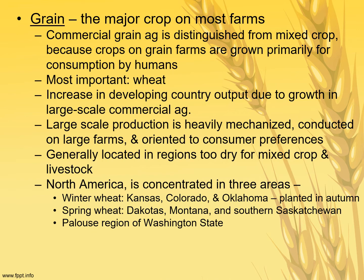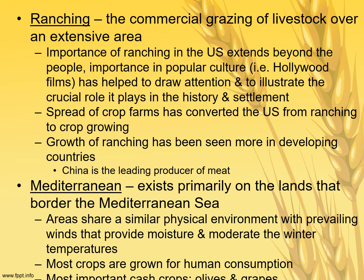Winter wheat is grown in Kansas, Colorado, and Oklahoma; spring wheat in the Dakotas, Montana, and Saskatchewan, Canada. Ranching is the commercial grazing of livestock over an extensive area. Its importance in the U.S. extends beyond economics — it's been important in pop culture with cowboys and has helped illustrate the crucial role it played in the history and settlement of the U.S. West. The spread of crop farms has converted much of the U.S. from ranching to crop growing. Ranching growth has shifted more to developing countries, with China becoming a major meat producer using its dry western lands.